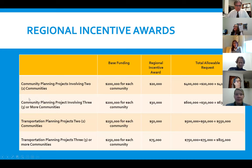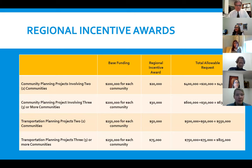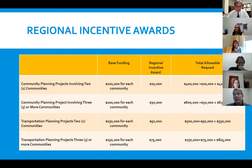This year we decided to increase our regional incentives. If you're applying for community planning or transportation planning, you can combine that application with a neighboring community impacted by the same issue. For example, three communities in the Plainville area came in and applied together and received a regional incentive — we really love to see group projects.